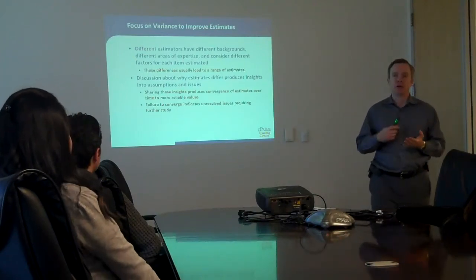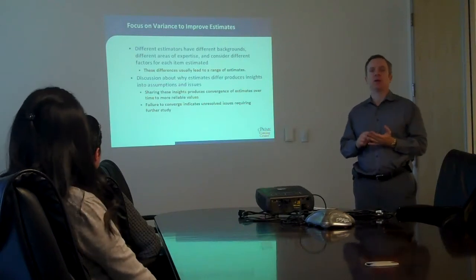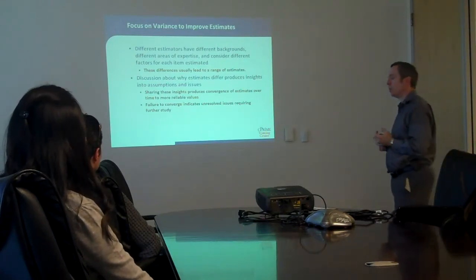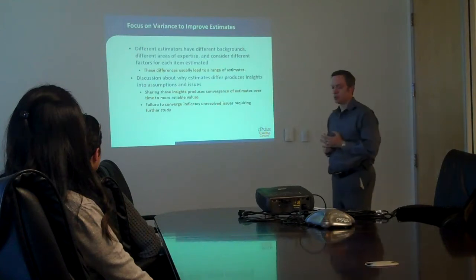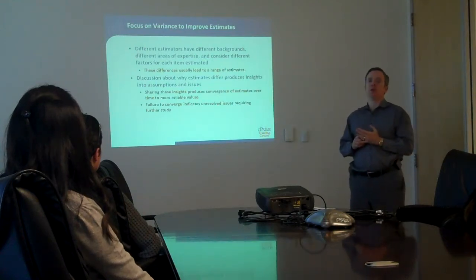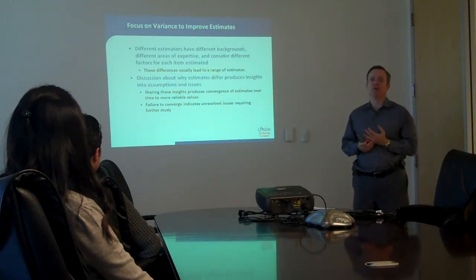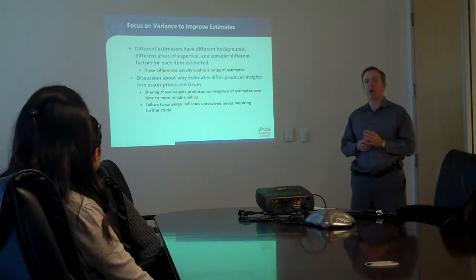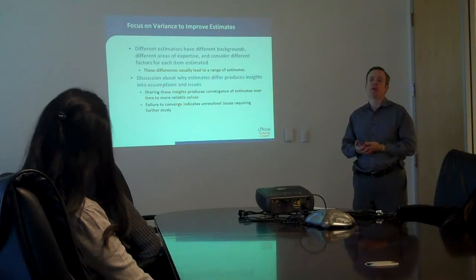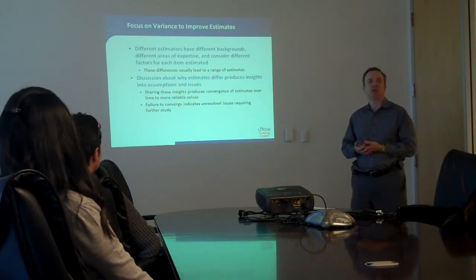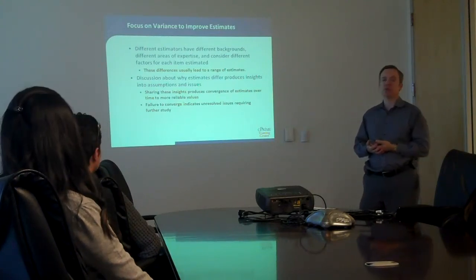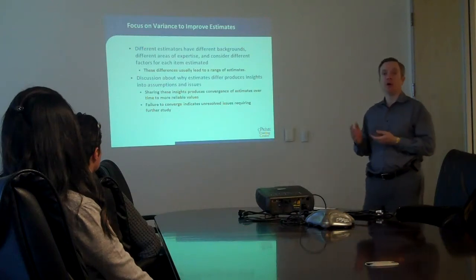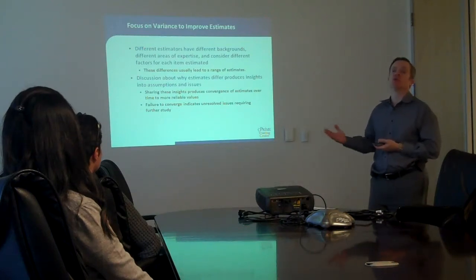The fact of non-convergence tells us something about the problem we're trying to estimate. What it tells us is that there's something wrong with it. Either we're all so ignorant that we have no clue — which is usually not going to be the case — or there's something about the way the thing we're estimating has been written that makes it inherently not possible to estimate. Usually that means there's a mistake, it's really vague, something critical is left out, or a bunch of critical things were left out and we're not even sure which ones they are.